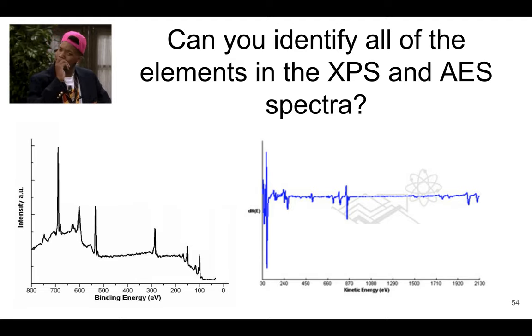Taking a look at each one, I want you to identify all of them, or as many as you can, elements from each of these spectrums. You're going to use those tables and figures that I put in the miscellaneous file on Canvas for surface characterization. There'll be a table for XPS data and a figure for AES data.